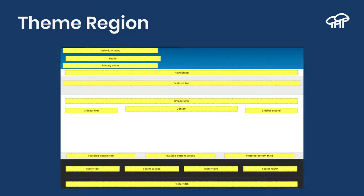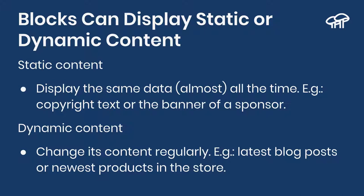We now know what a theme region is, and that blocks can be placed in theme regions. Blocks can display static or dynamic content. Static content is one that is going to be the same or almost the same every time — for example, a copyright text at the bottom that says 'Copyright 2018' which changes once a year. Or in an event like this one, when we have sponsors, we want to show their logos on every page — that's basically static content that rarely changes. On the other hand, you can have dynamic content: if you have blog posts one or two per day, or a store adding products every 15 minutes, Drupal can be configured to update automatically based on what you are adding to the website.